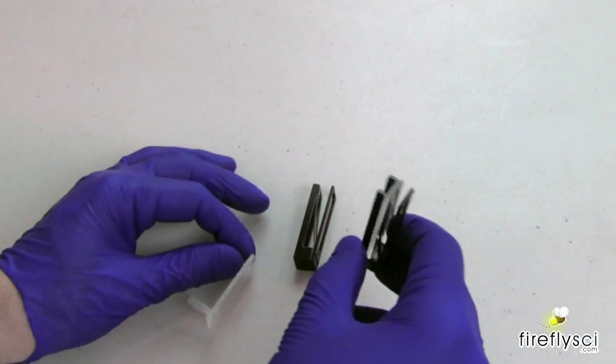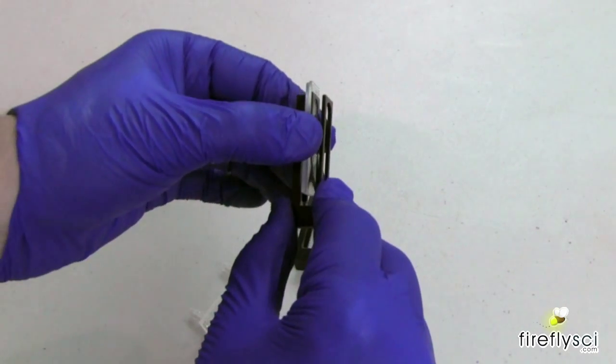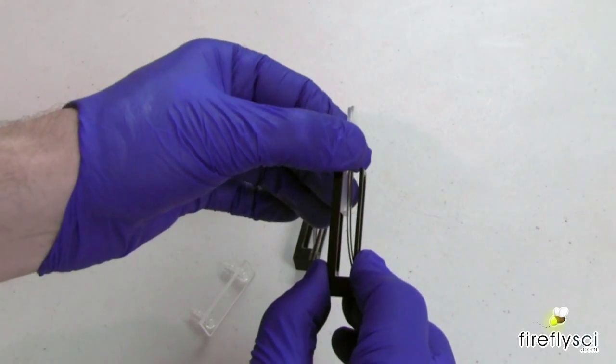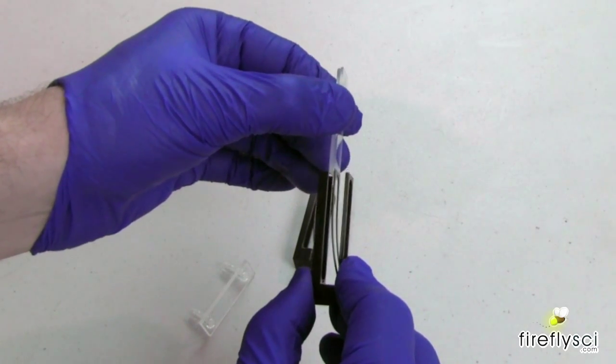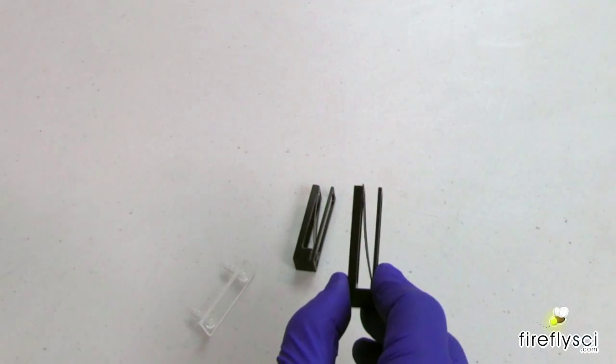Okay, so we're going to take out the Type 20 cuvette, which you just simply slide it right out of the holder. And the spring snaps right back into place. Put this aside.